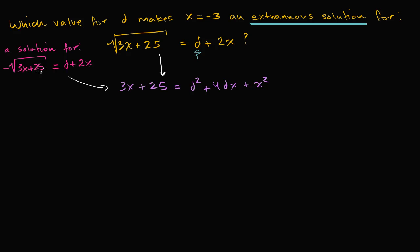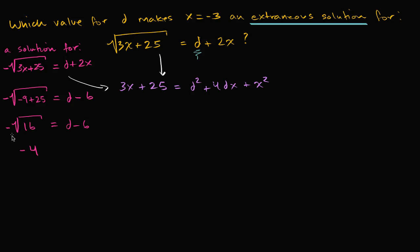Let's substitute x equals negative three into the negative equation and solve for d. If x equals negative three, this becomes negative the square root of three times negative three — which is negative nine — plus 25, equal to d plus two times negative three, which is d minus six. So that's the negative square root of negative nine plus 25, which is 16. The negative square root of 16 is negative four, so negative four equals d minus six. Adding six to both sides: d equals two.